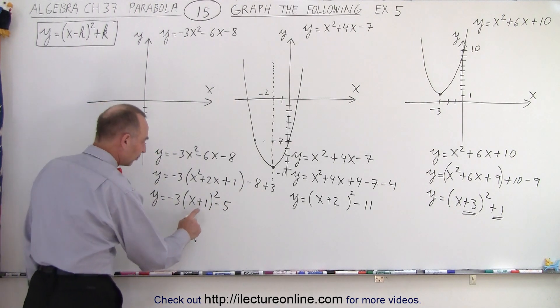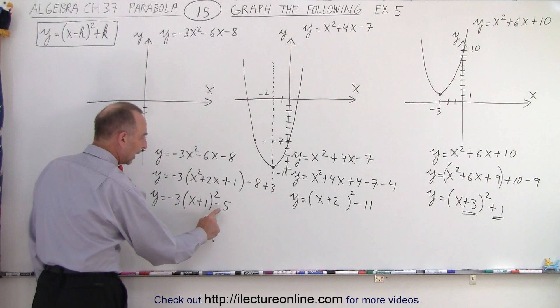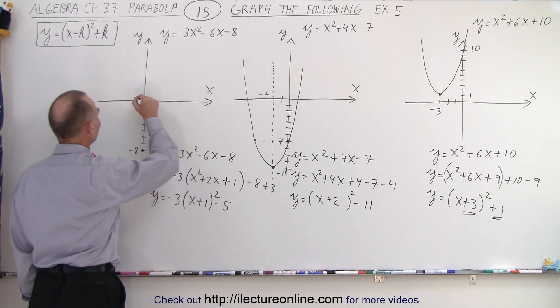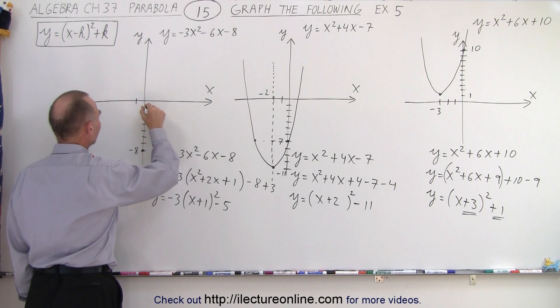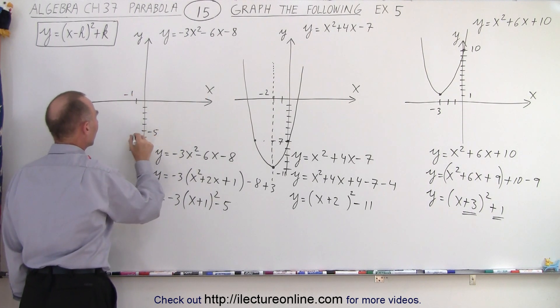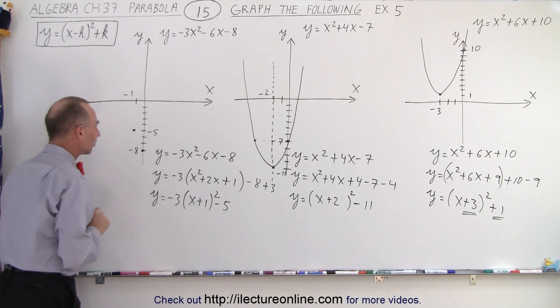That means it's shifted to the left by 1 and down by 5. So to the left by 1, down by 5: 1, 2, 3, 4, 5. This is negative 5, this is negative 1. So this is where we're going to have a vertex.